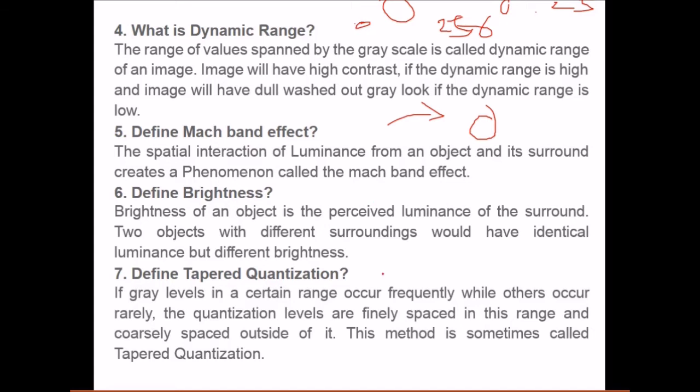Now define tapered quantization. If gray levels in a certain range occur frequently while others rarely, that means these happens, these happens, these happens. Others are not there in between. So it forms a tapered look. So the quantization levels are finely spaced in this range and coarsely spaced outside. This method is sometimes called as tapered quantization.